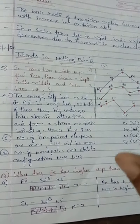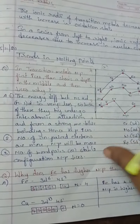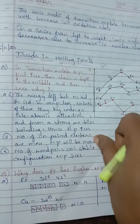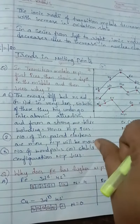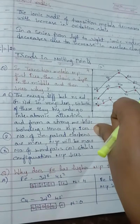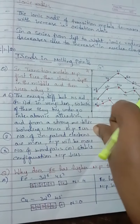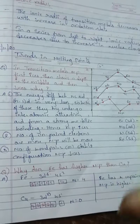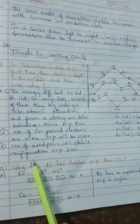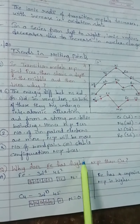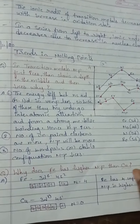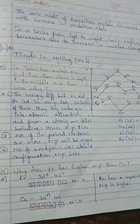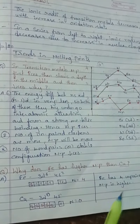Second concept: when an element has more unpaired electrons, the melting point will also be more. Third point: if they have a stable electronic configuration — fully filled or half filled — their melting point will decrease.